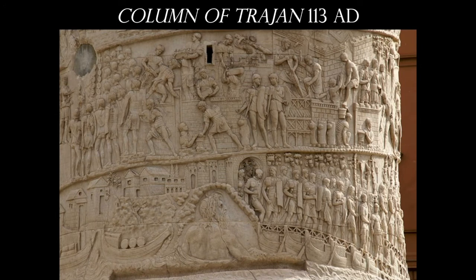One of the more famous scenes shows individuals building a fortification around the city. At the very bottom, there is a Poseidon-like figure — this is a personification of the Danube River, and this is where the conflict began.